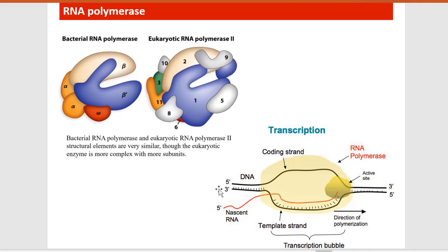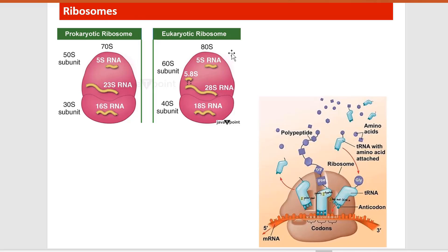In transcription, the DNA strand is used to produce a corresponding mRNA strand from which proteins can be produced. The template strand produces the nascent RNA strand. Ribosomes are used in protein synthesis. The prokaryotic ribosome is a 70S ribosome, composed of 50S and 30S subunits.